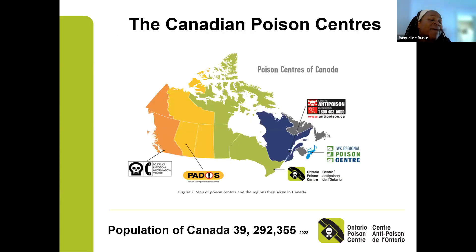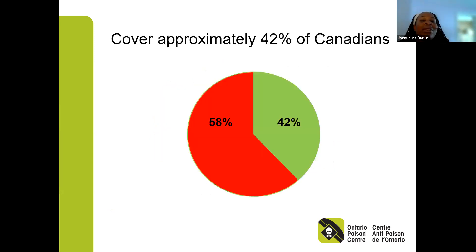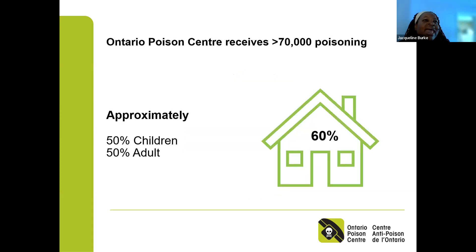We have five poison centres across Canada. The Ontario Poison Centre covers Manitoba, Nunavut, and Ontario — approximately 16.5 million people, or about 42% of Canadians. We see over 70,000 calls per year. About 60% of these calls come from home, and approximately 50% are for children and 50% for adults, including both intentional and unintentional exposures.